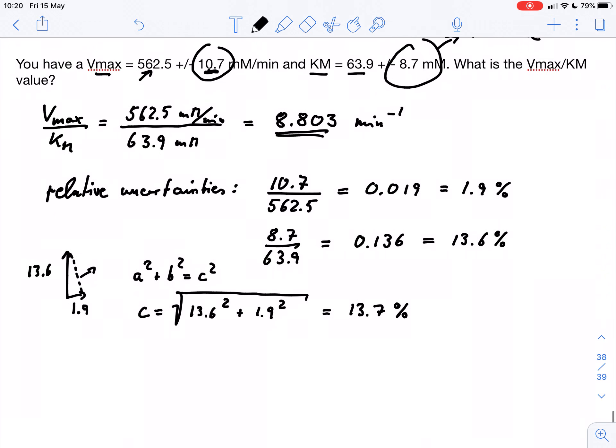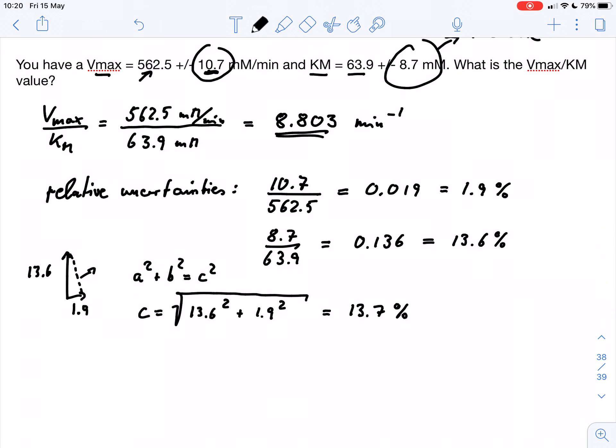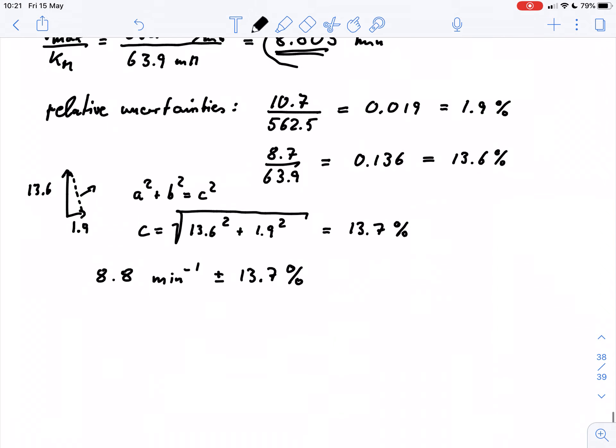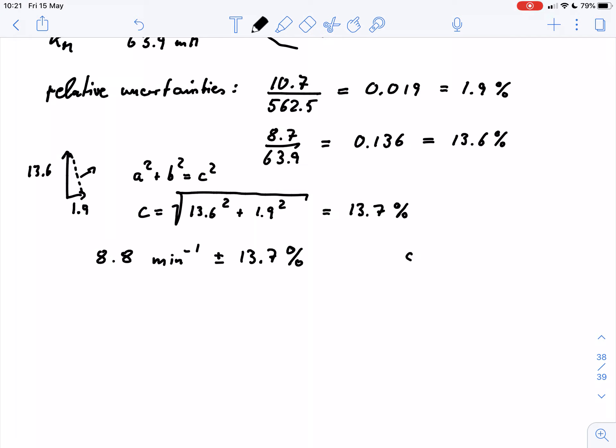So we can say we get our value of the ratio as 8.8 per minute plus minus 13.7%. And of course, we can convert this percentage. All we need to do is we multiply our 8.8 times 13.7 over 100. That's the definition of percentage. And we would get something like 1.21.